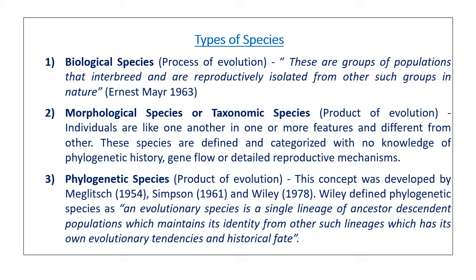The third one is the phylogenetic species. The phylogenetic species is defined as an evolutionary species — a single lineage of ancestor-descendant populations which maintains its identity from other such lineages, with its own evolutionary tendencies and historical fate.